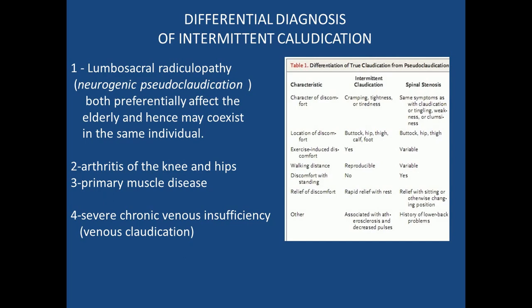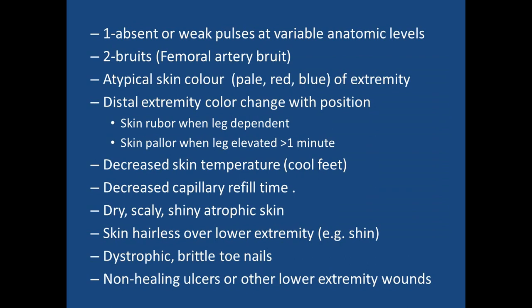Physical signs of peripheral arterial disease include absent or weak pulses, bruits, skin color changes at rest or with position, coldness of the lower extremities, decreased capillary refilling time, dry scaly atrophic skin with loss of hair, brittle nails, and non-healing or poorly healing ulcers and wounds.